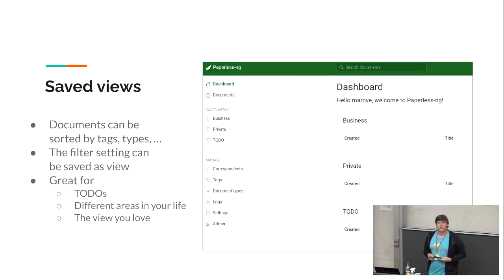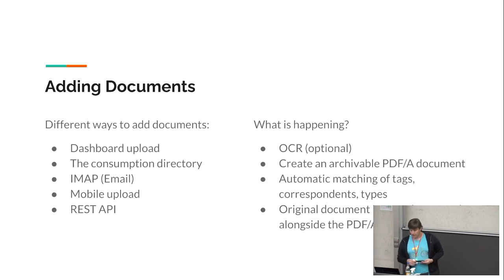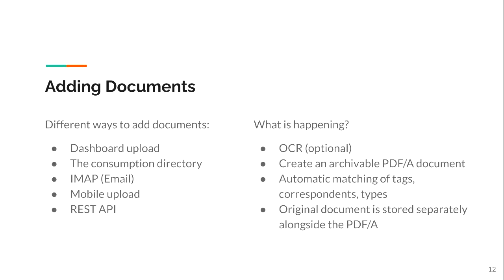This is great for to-dos and different areas of your life — like a company and private stuff, you can store everything there. Ways to add documents: you can use the dashboard, or you can use a consumption directory — that's the main way to get documents into Paperless, just a folder on the server where you put PDFs. Paperless loops through this folder and picks up every document added there. It also has an email interface, mobile apps, and a REST API.